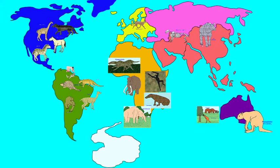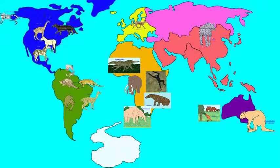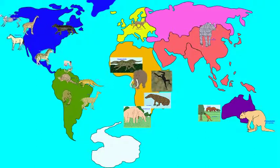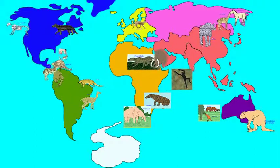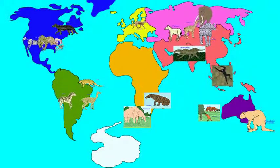India was joined to Asia about 25 million years ago, the Middle East joined Africa to Asia about 20 million years ago, and South America joined North America about 4 million years ago. This ended this period of isolation, and species were able to migrate between the continents in a way that they were unable during the early part of the Cenozoic era.